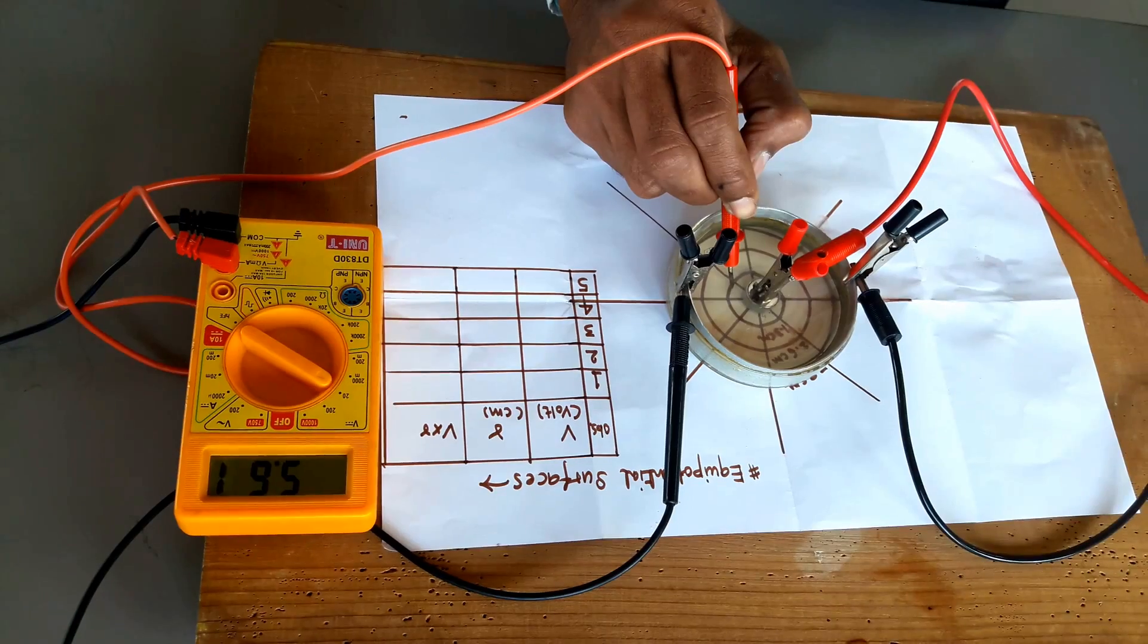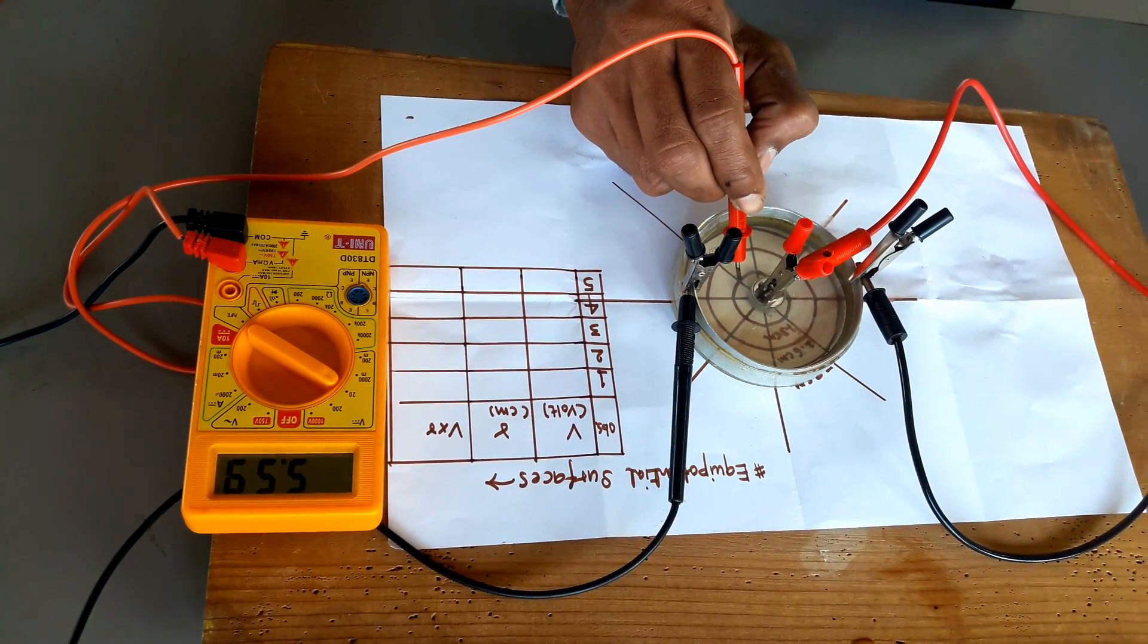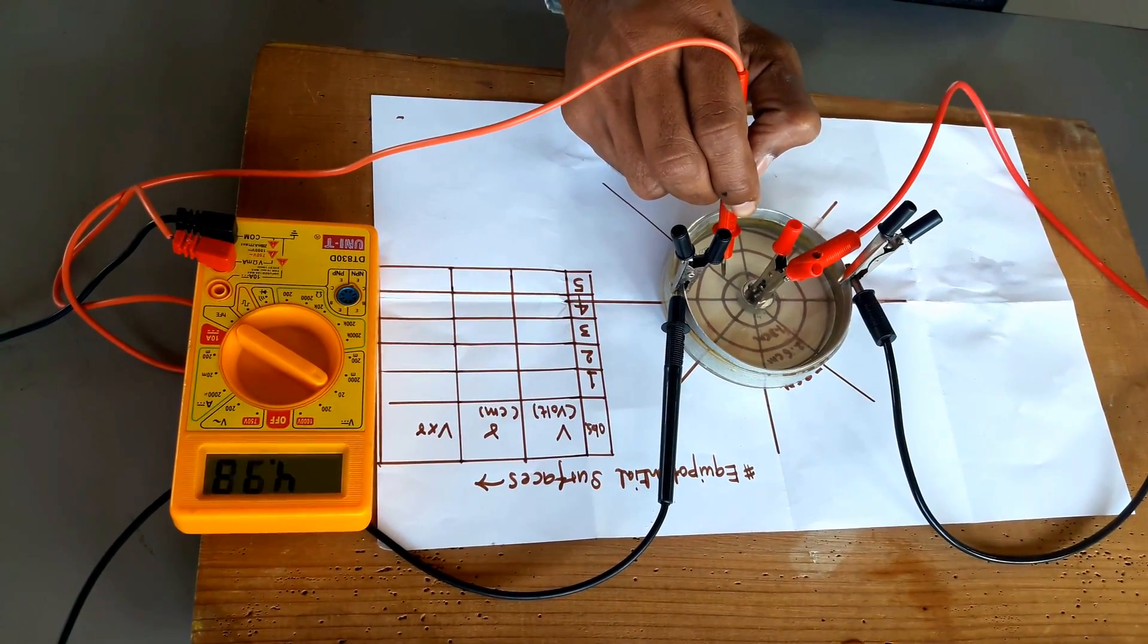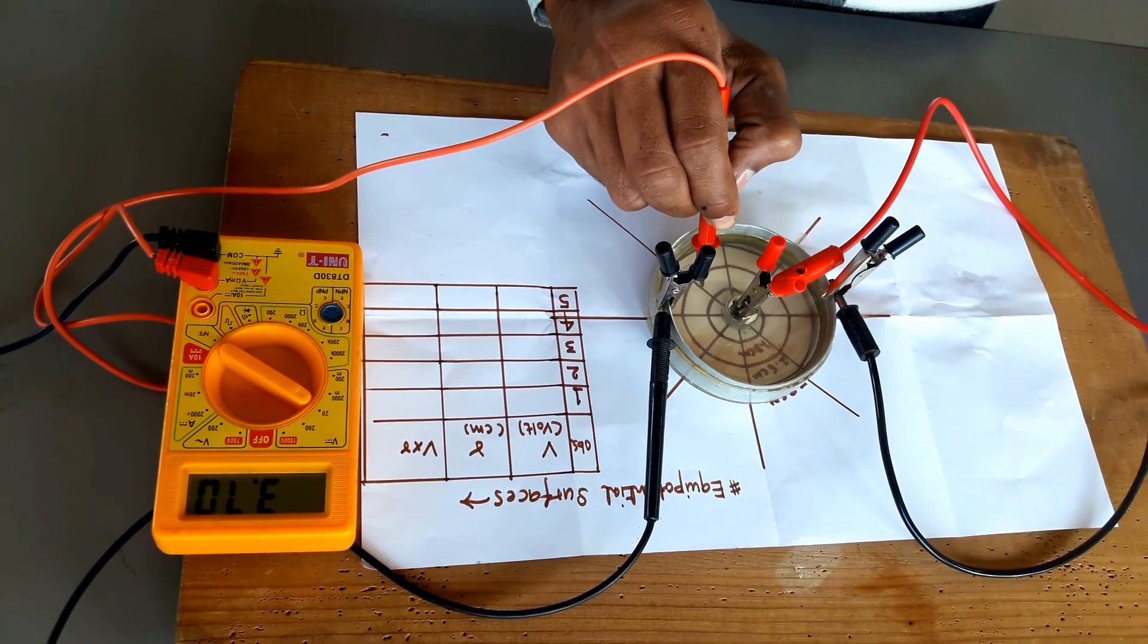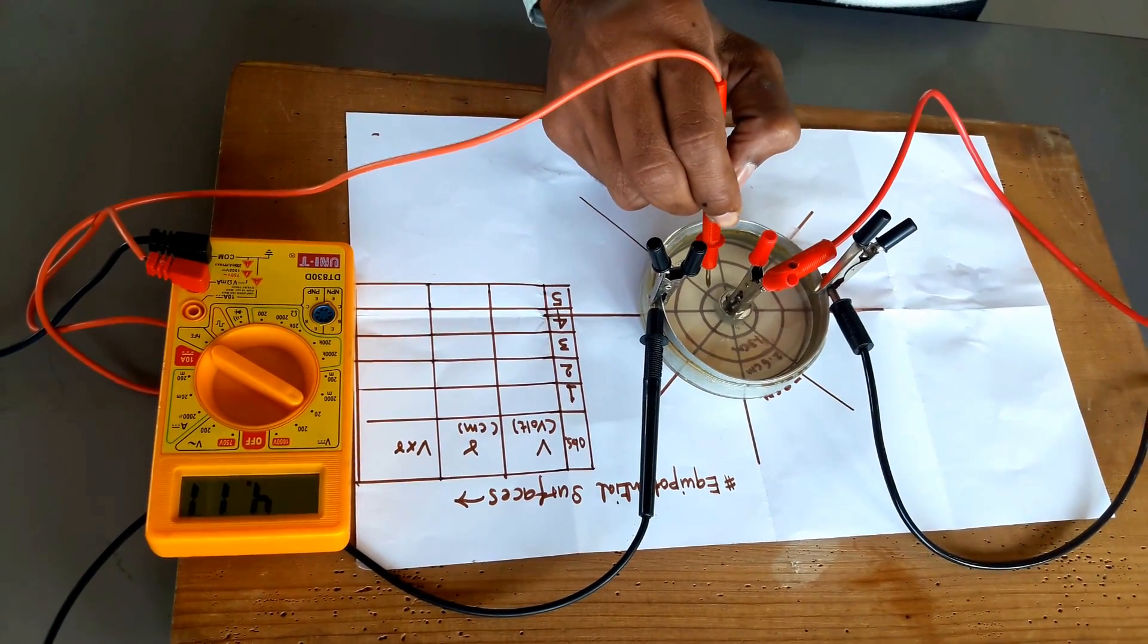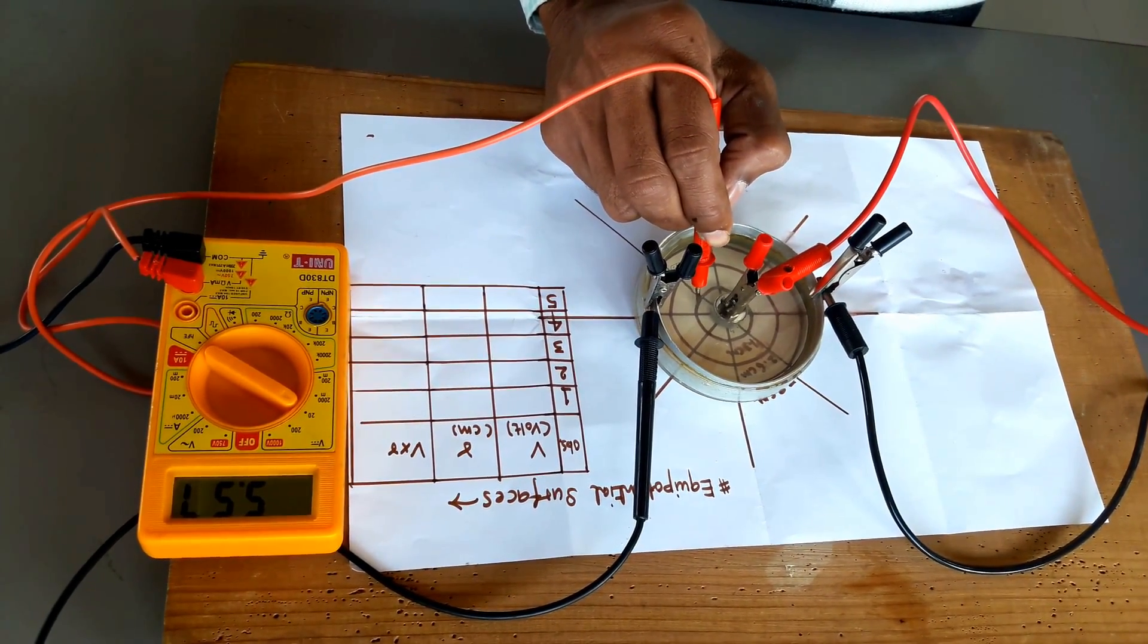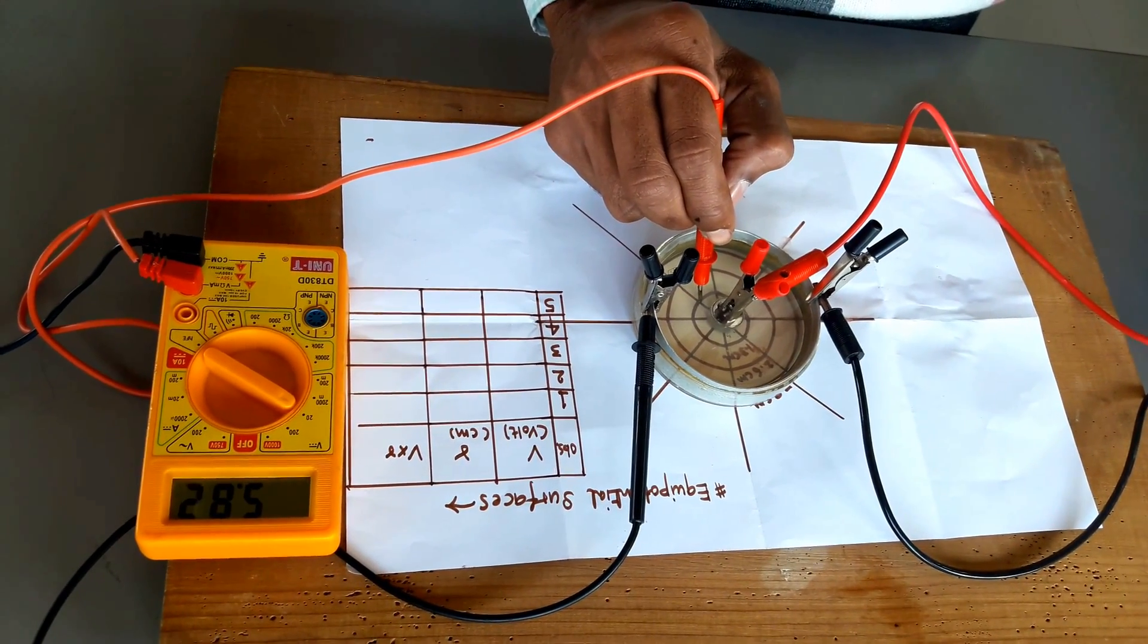If you find it is near about 5.5, but if you go away from it, it is reducing. So 5.5 volts we are getting on an average on the first circle.